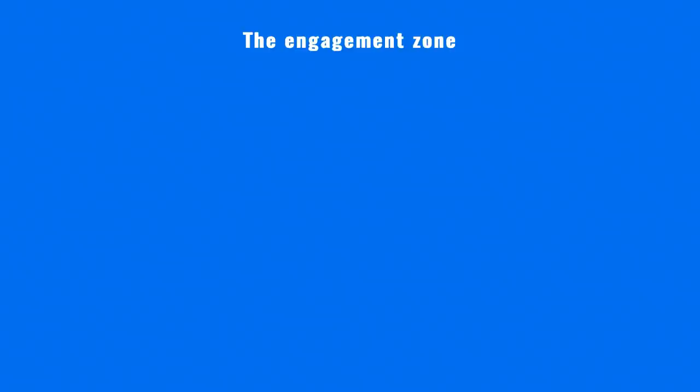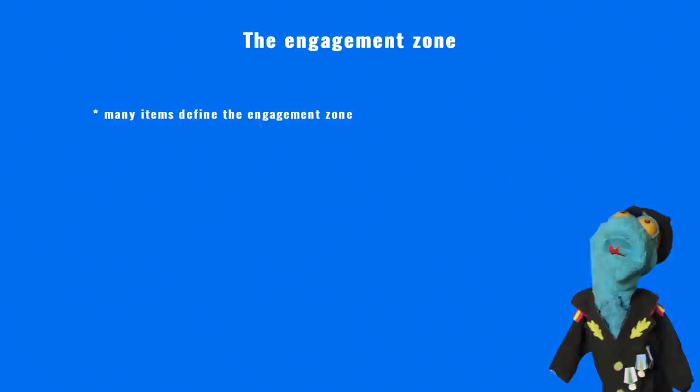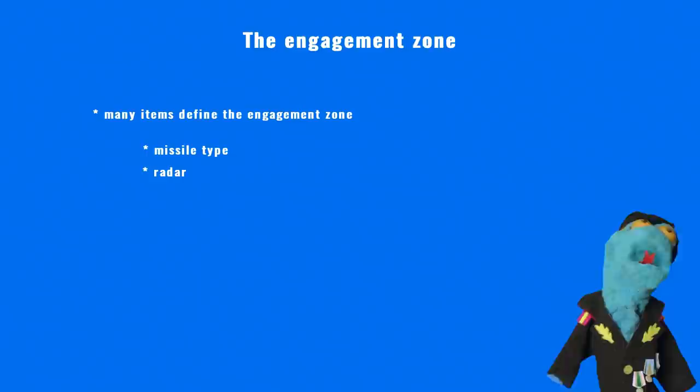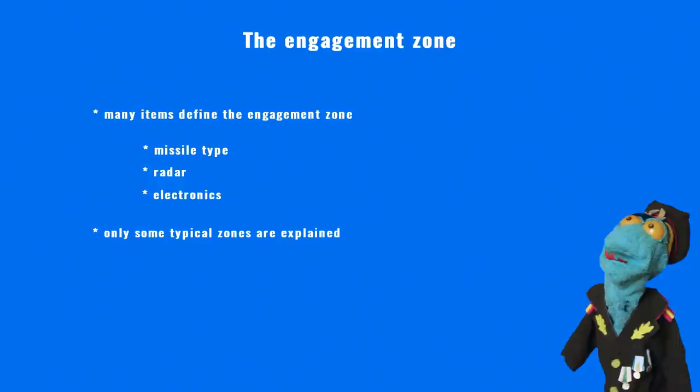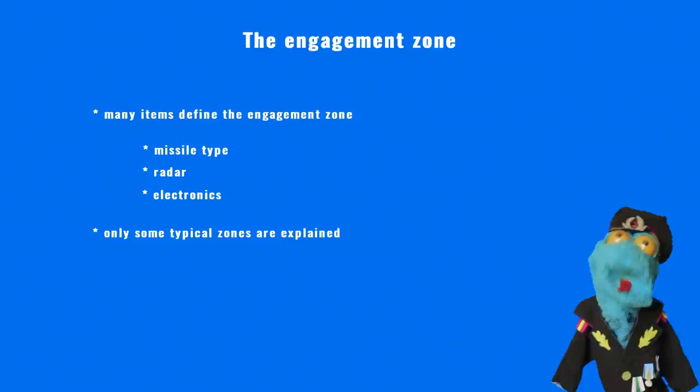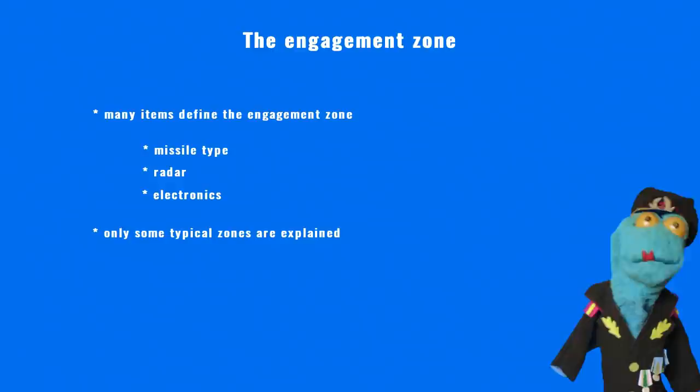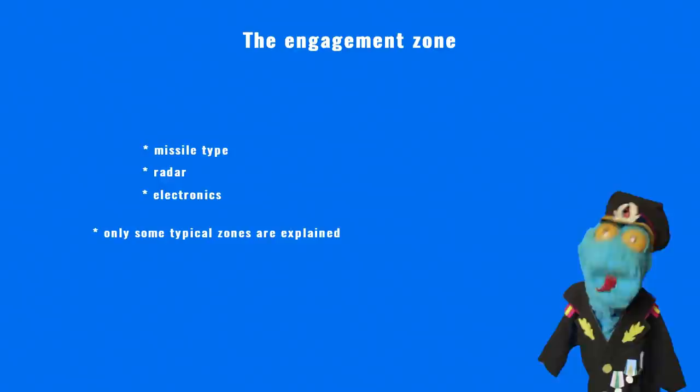The engagement zone of the system cannot be easily defined because upgraded variants of the S-25 system could use older missiles. The combination of radar, electronics and missiles resulted in different engagement zones. Only major changes are explained for some combinations of the system and missiles. These demonstrate well the increased capability of the system — thanks to those changes, the engagement zone dramatically increased compared to the first variant of the S-25 family.